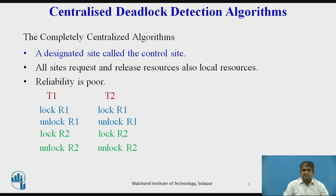This results in large delays in responding to user requests, large communication overhead, and congestion of communication links near the control site. Reliability is poor because if the control site fails, the entire system comes to a halt, as all status information resides at the control site.